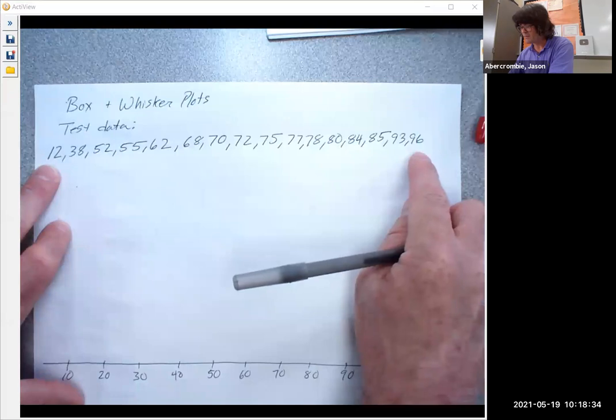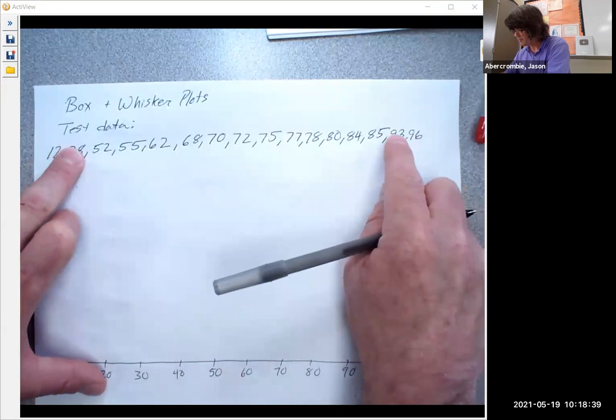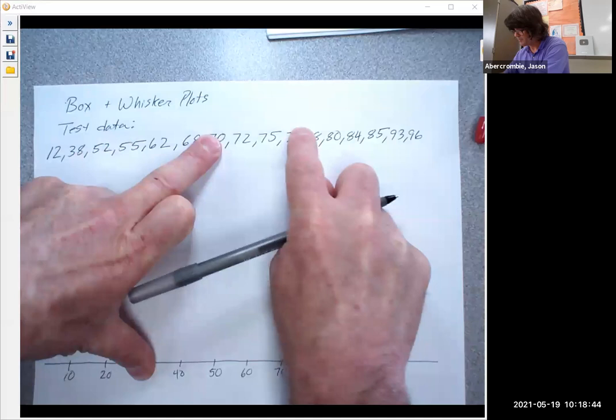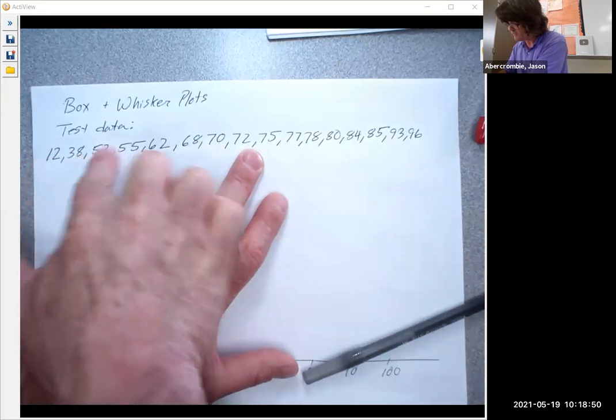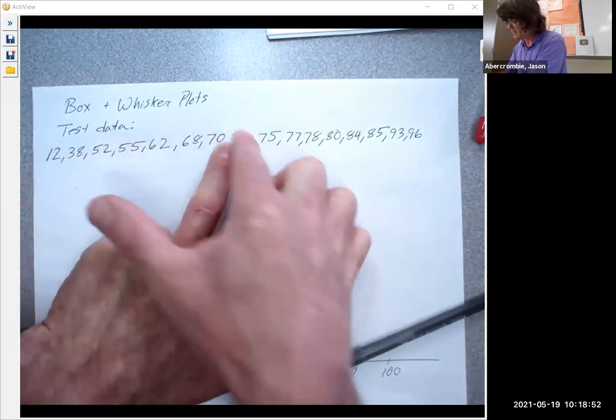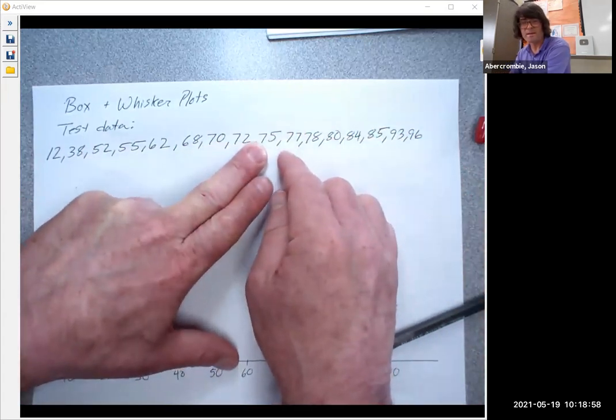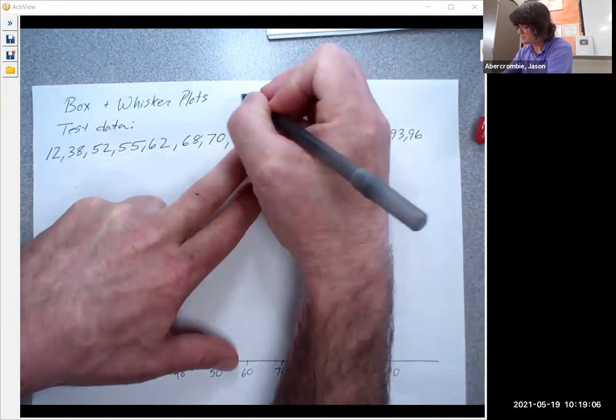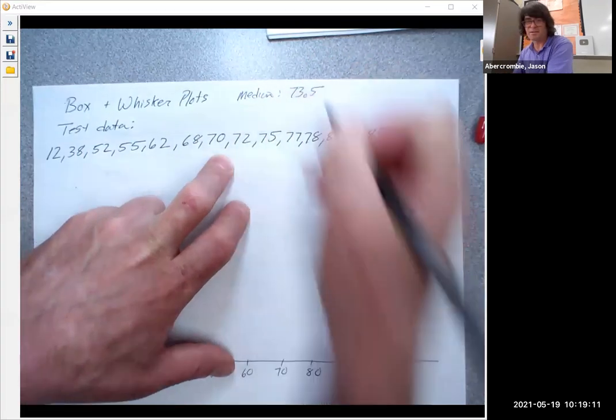Here's 16 values. Let's get the median first. If you count in, you go count 1, 1, 1, 1, 1, 1, 1. Looks like the two middle numbers are 72 and 73. You can verify that. Counting from each side, we get to the 8th position. So these are the two middle numbers. The median is the average of 72 and 75, which is 73.5. Let's write that down. Median is 73.5.